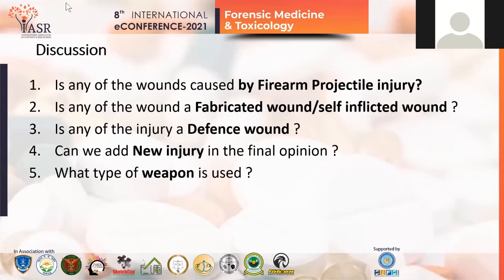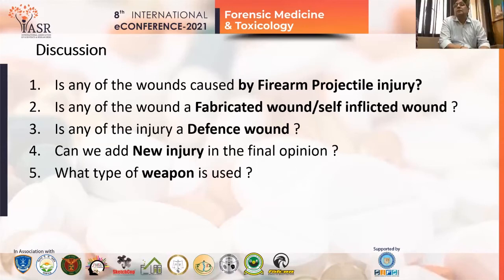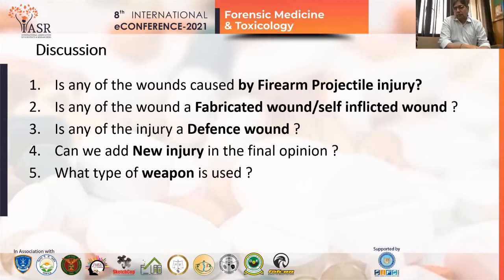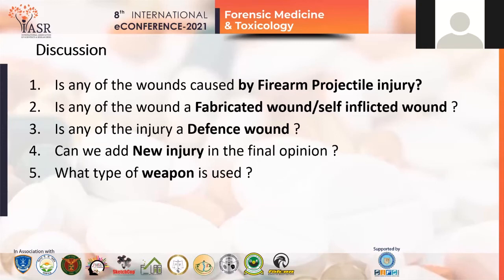The fourth point: can we add a new injury in the final opinion? Yes, there is no harm in adding a new injury whenever it comes to knowledge. Usually such injuries are ones not visible during clinical examination — like in this case, undisplaced fractures or foreign body lodgment. Or, if a forensic clinical practitioner forgets to document any injury or realizes it later, they can issue a corrigendum within a stipulated time to the respective authorities. The last point: what type of weapon was used? As per examination of the given dimensions, margins, and external features, the injury may be caused by a pointed weapon, a blunt weapon, or a composite weapon with one pointed end and one blunt end, as the depth is greater than other dimensions in some injuries.